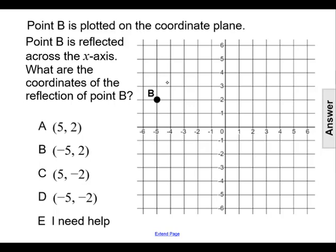So point B is located at (-5, 2). It is 5 units left and 2 units up from the origin. We are then reflecting it across the x-axis.